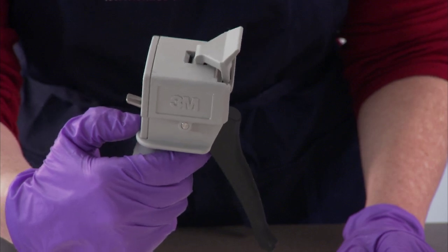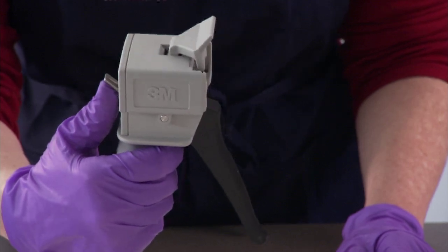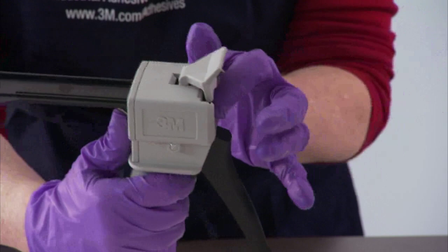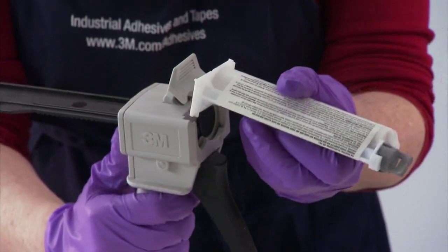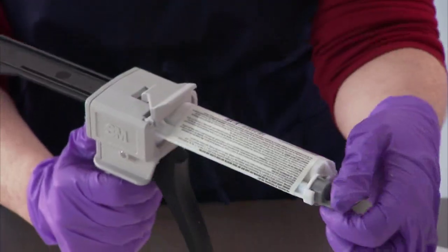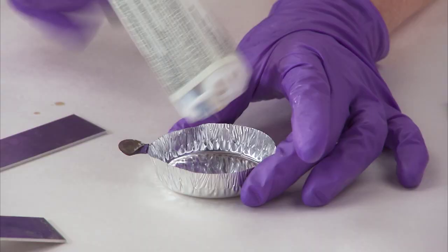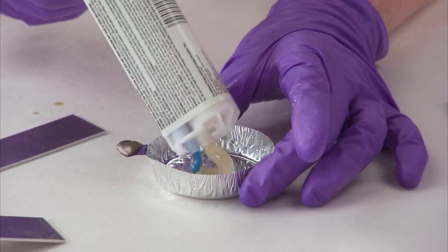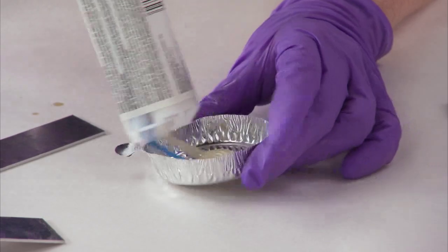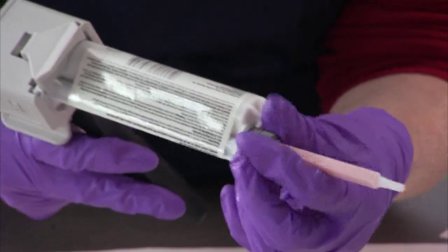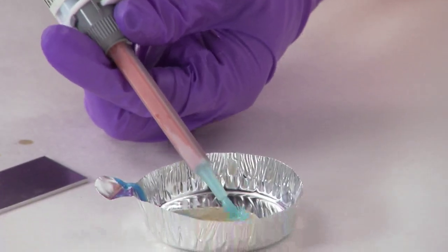Now, set up the EPX applicator. Push up the thumb latch and insert the plunger. Attach the 3M Scotch Weld Acrylic Adhesive DP8410NS cartridge and bleed a little adhesive to make sure there is flow from both sides. Attach the nozzle and make sure there is flow.